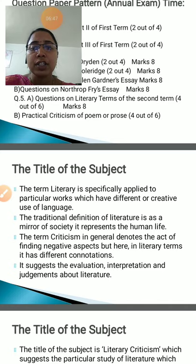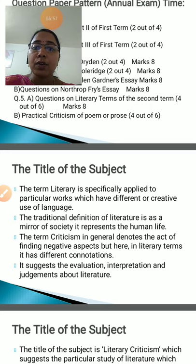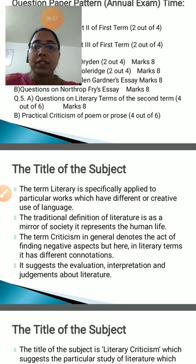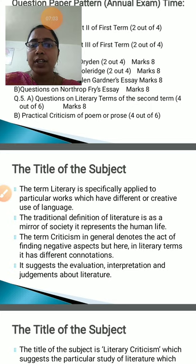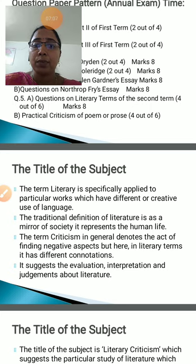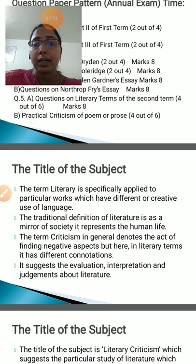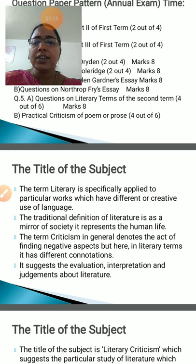The traditional definition says literature is called a mirror of society — it represents human life. Just as we see our reflection in a mirror, literature represents the picture of society. Whatever is happening in human life gets reflected in that particular literary work. But this is the traditional definition.